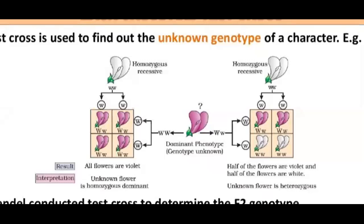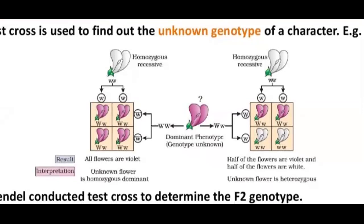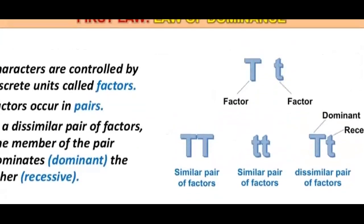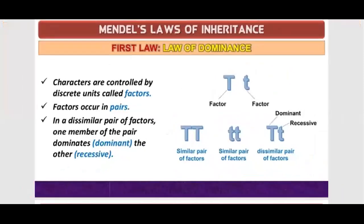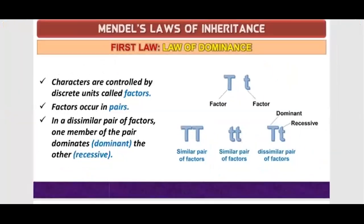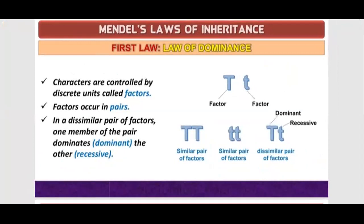Mendel conducted a test cross to determine the F2 genotype. The genotype of F2 was basically the violet — we did not know if it was homozygosity or heterozygosity. So to find out, he crossed the F2 genotype with recessive parent. He saw that the dominant character is expressed, meaning many offspring showed heterozygosity. In heterozygous condition, we always express the dominant character.